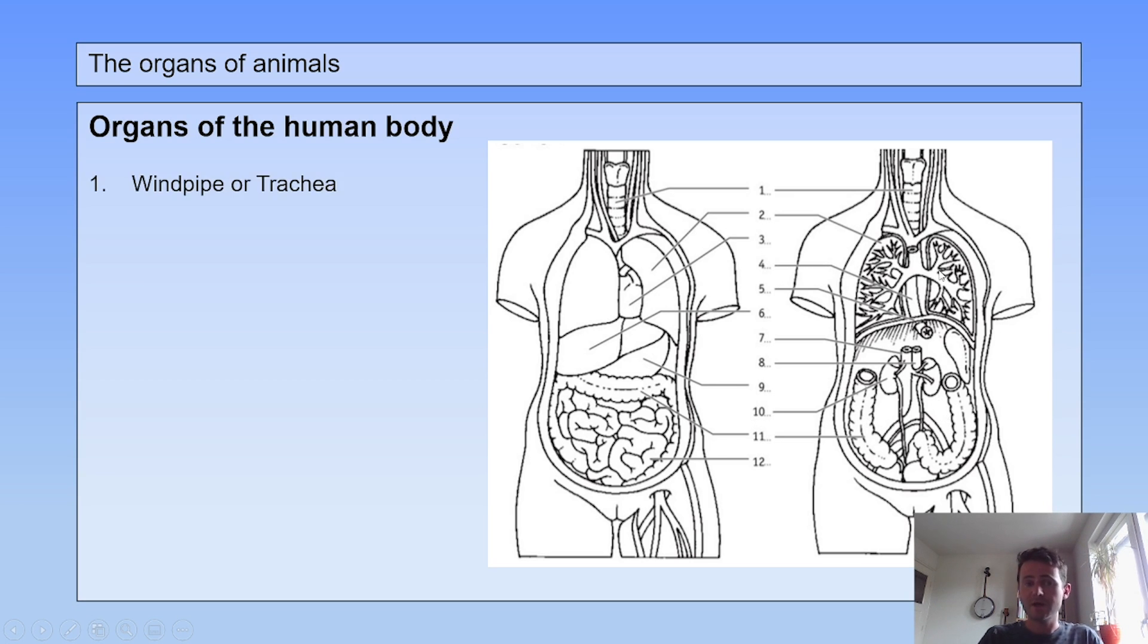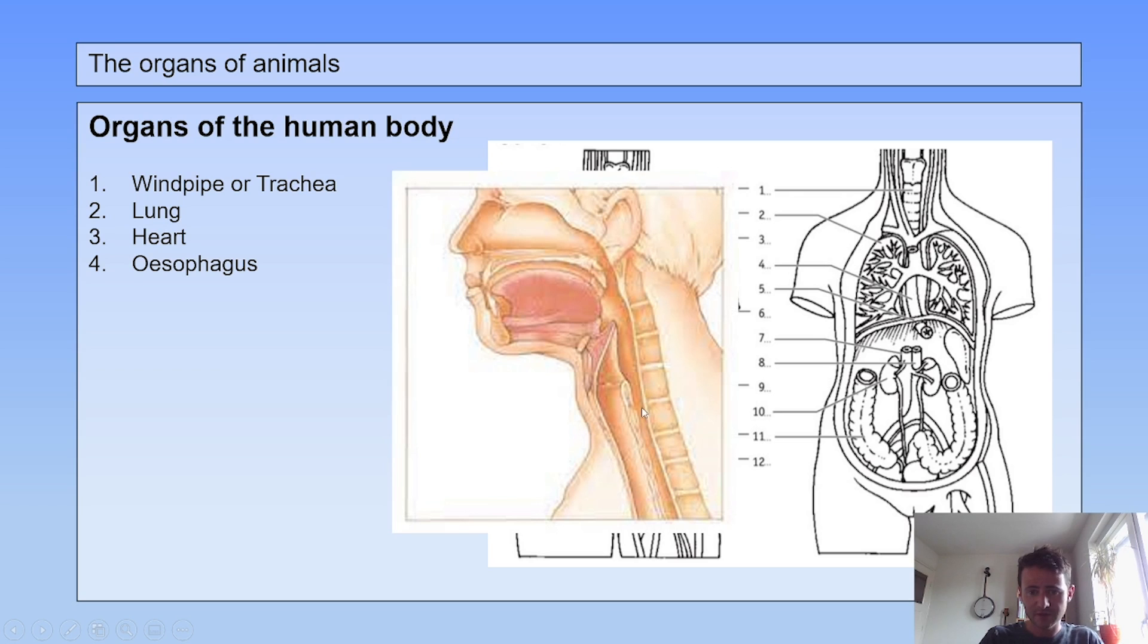Number one is still the windpipe or trachea. Number two is the lung or the lungs. Number three is the heart. Number four is the esophagus, just behind the windpipe. It transports your food from your mouth to your stomach. This on the front side is your trachea or your windpipe. You can recognize it because your windpipe has all these rings made out of cartilage. You can feel it on your throat, you feel these rings of cartilage.